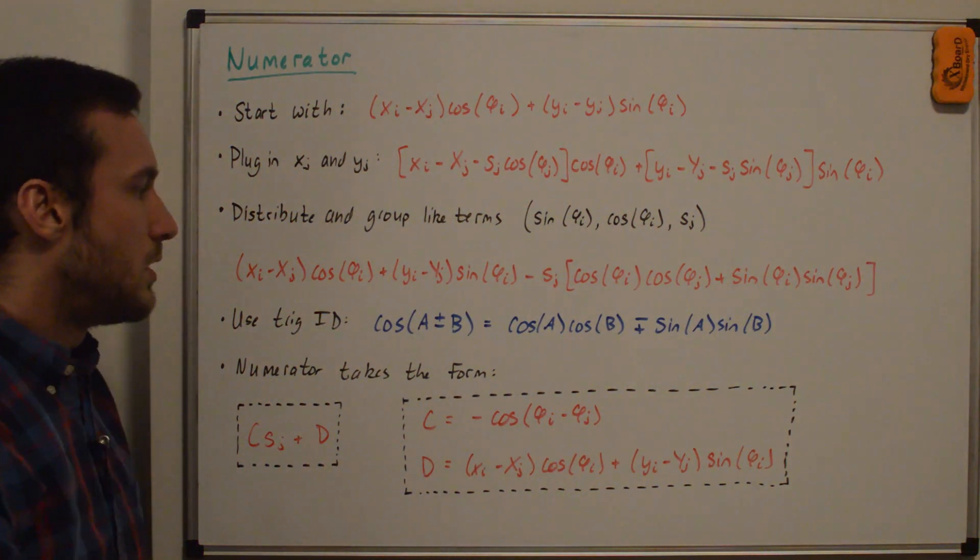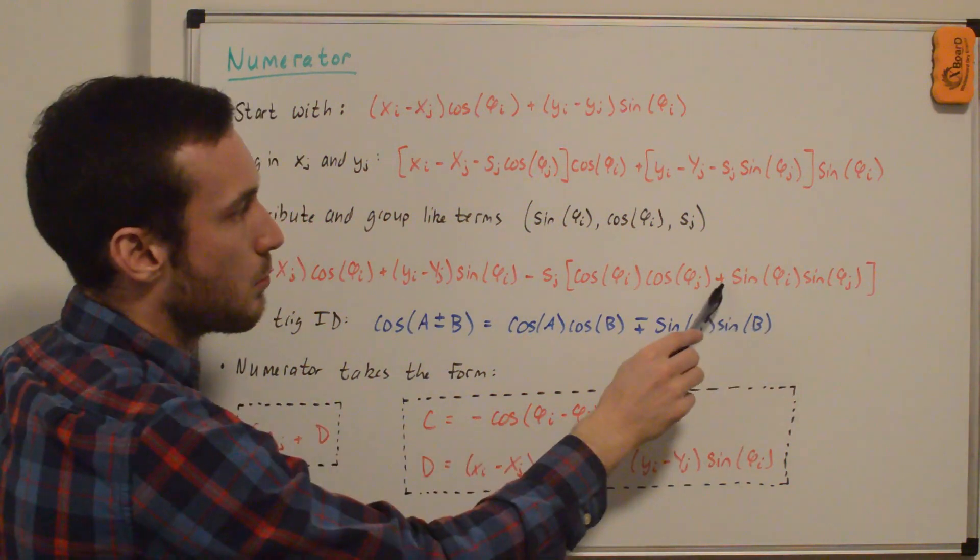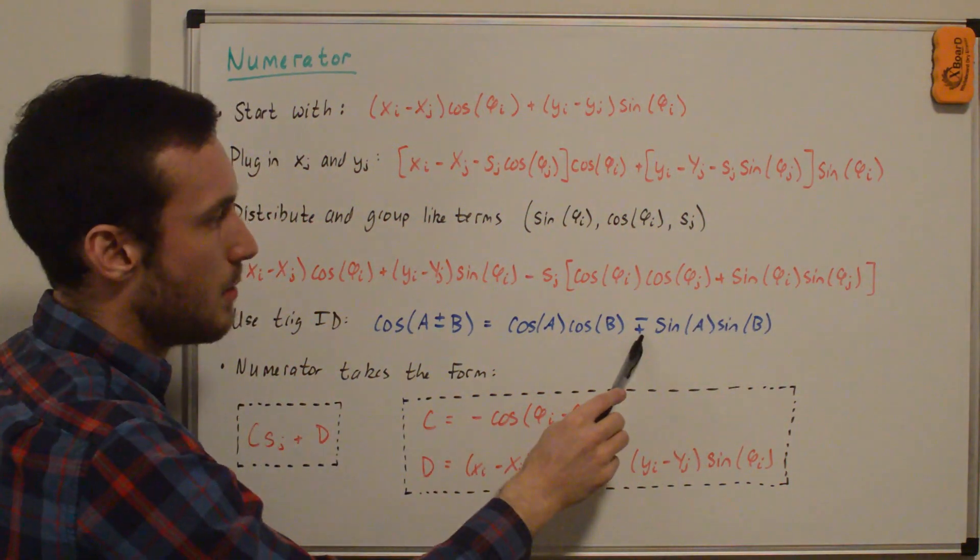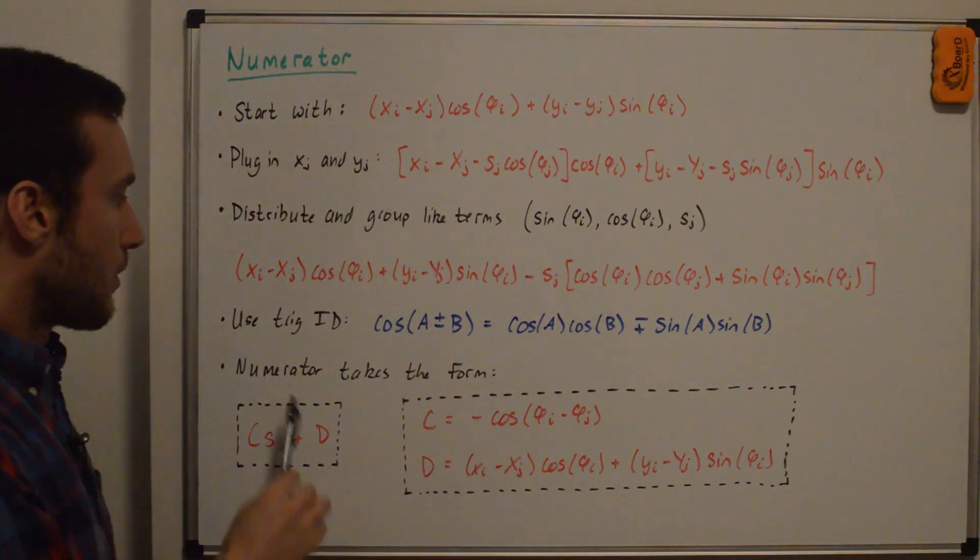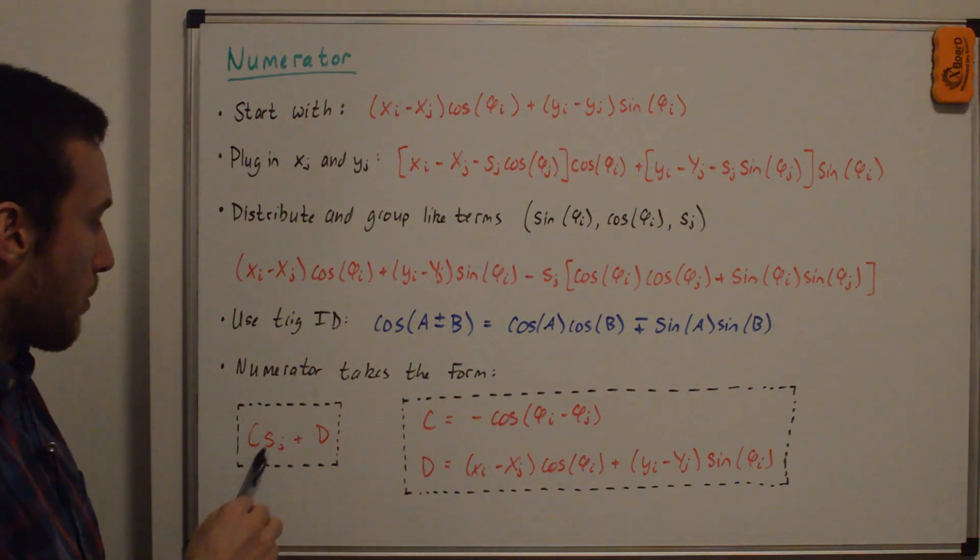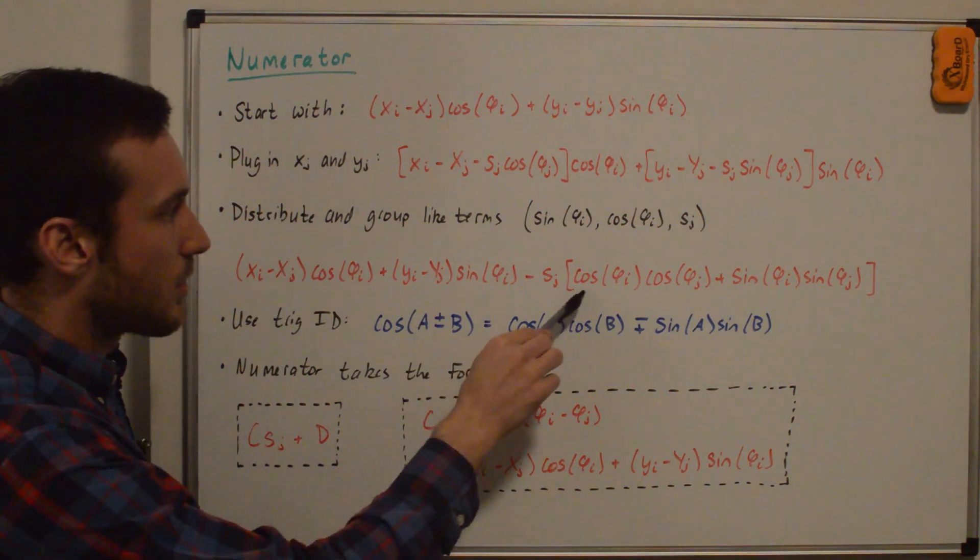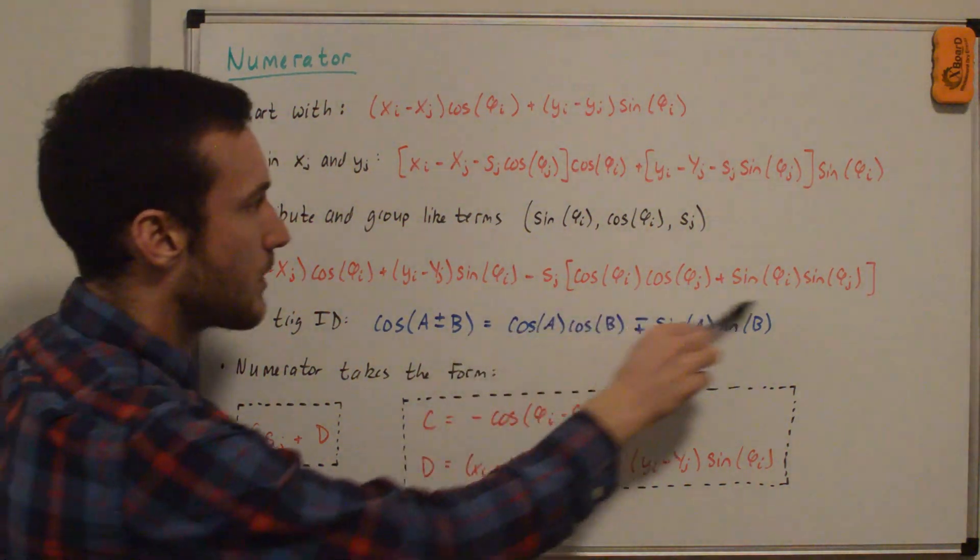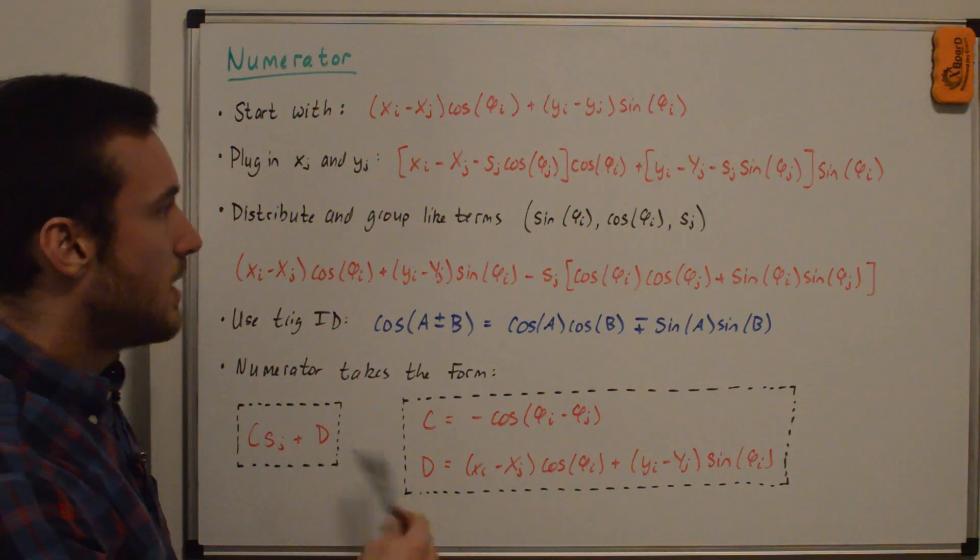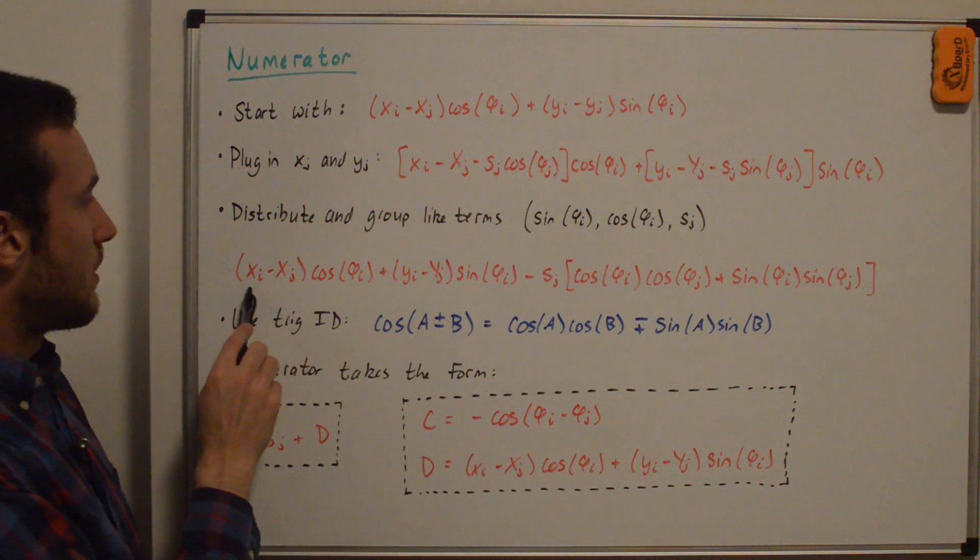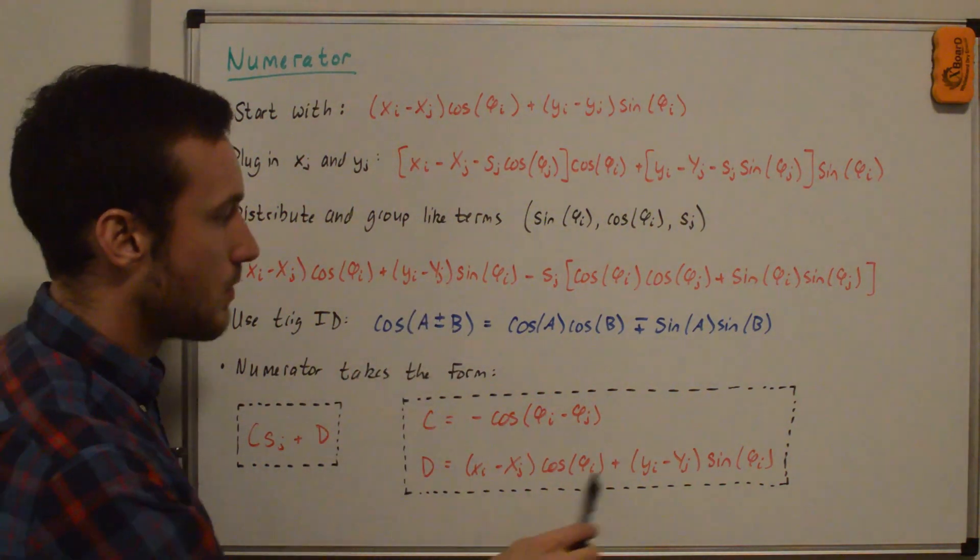So then we're going to use the trig identity shown here for this term right here. And because there's a plus in here, we want the bottom sign. So that's the plus here, which means it's going to be a cosine minus. And so the numerator then takes the form shown down here, c times sj plus d, where c is just this term here. So we have a minus. And then whatever this got replaced as, which would be cosine of phi i minus phi j. And then d is the rest of it. And that just means it's xi minus xj cosine phi i plus yi minus yj sine phi i.